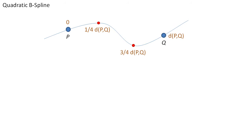For the quadratic B-spline scheme, the parameter values are one-quarter and three-quarters of the distance between pq.